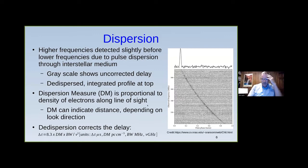Two main factors I'll discuss throughout: dispersion and folding. You've probably seen this cartoon where a weak pulsar is hidden in noise. We fold the data at the desired period — either known or searched — and add them all up, basically integrating all the small contributions until a pulse appears. This folding can be performed in either the frequency domain or the time domain.